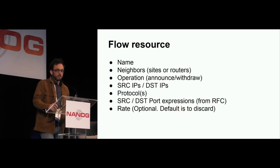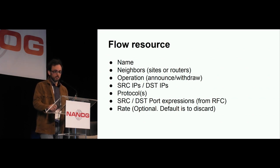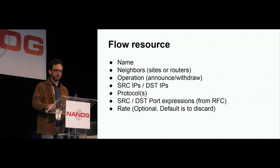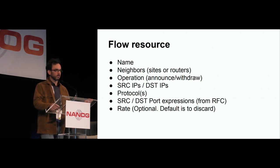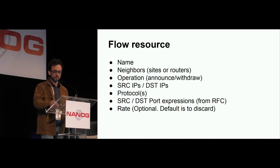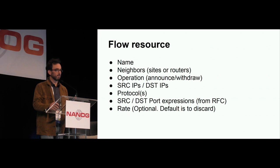The flow resource is an n-tuple with all the possible parameters for matching packets. We did not include all the possibilities — there are more, like packet length and ICMP code — but we thought we'd start simple and then add on. So the parameters in the flow resource are: a name — we usually name it after the incident that's going on — the neighbors can be sites or routers, the operation is either announcing or withdrawing, you have source IPs and/or destination IPs, protocol, source and destination port expressions based on the RFC syntax. And optionally, a rate — so by default we discard packets, but if we pass the rate option, then the packets are rate-limited.